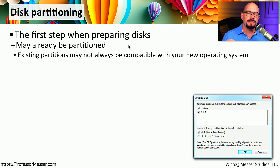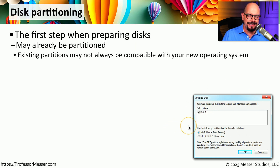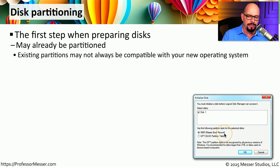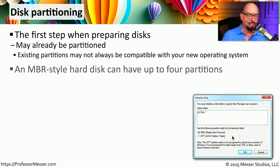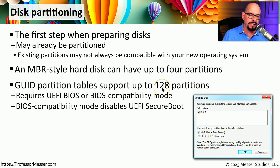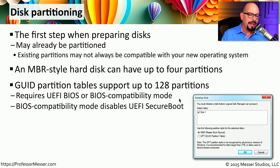This partitioning process is usually one of the very first things you have to do when installing an operating system. Sometimes there are existing partitions on a drive and you might need to remove them, or you may be able to add additional partitions along with them. This is the dialog box you have inside of Windows when you want to format the drive, and it's very similar to the dialog you get during an operating system installation. You can select which drive to use, then decide whether you would use MBR for Master Boot Record or GPT for the GUID Partition Table. This requires you to have a UEFI BIOS or work in a BIOS compatibility mode. If you enable the BIOS compatibility mode, it disables the ability to secure boot, which means many newer operating systems will not work in a BIOS compatibility mode.